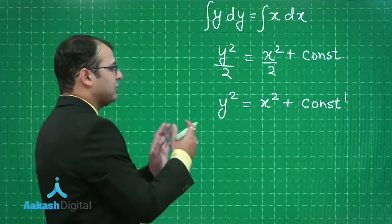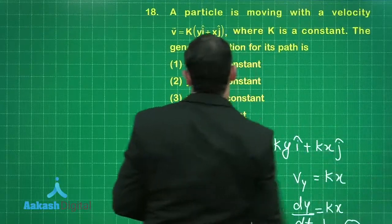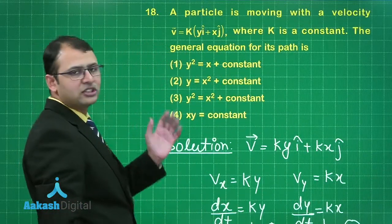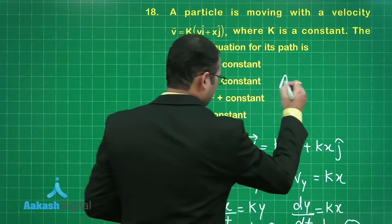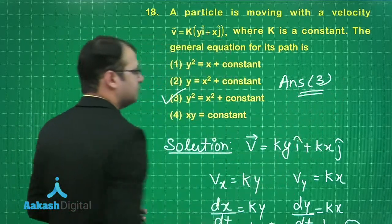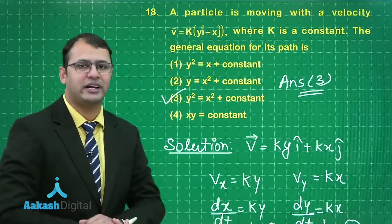What is the relation here, y square equals to x square plus a constant. Let's see which is the best suited option. First does not satisfy, second does not satisfy. Yes, the third equation is the right answer to this question. Hope it was clear to you. Let's move on to our next section of question number 19.